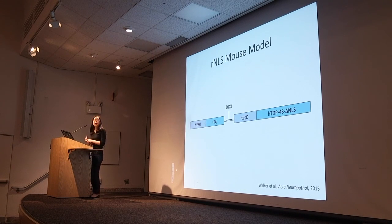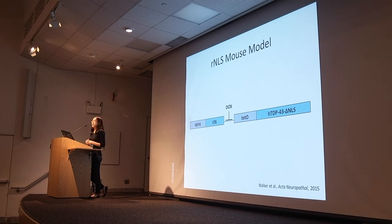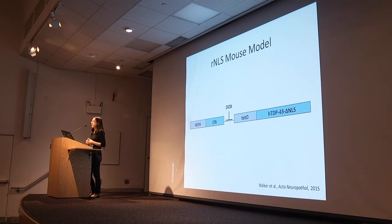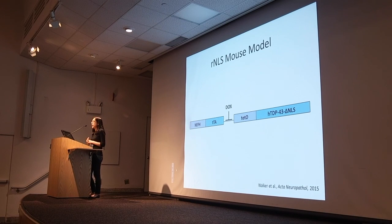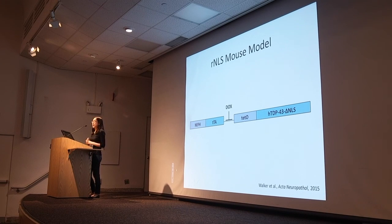Our recently published mouse model called Regulatable Nuclear Localization Sequence, or RMLS, is a mouse model based on TDP43 proteinopathy. It's a TET-OFF inducible transgenic mouse model overexpressing human TDP43 with a mutated nuclear localization sequence so that the protein preferentially localizes to the cytoplasm.